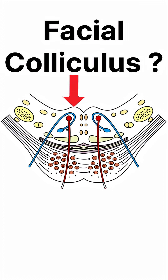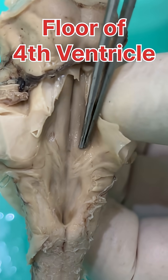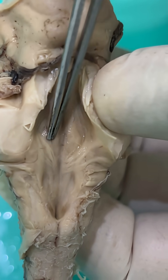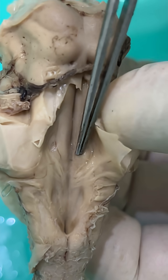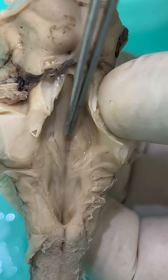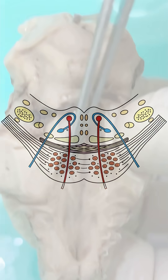What is facial colliculus and why does it appear? When you look at the floor of the fourth ventricle, you can appreciate a bulging known as facial colliculus, which is a part of the posterior area of the pons.